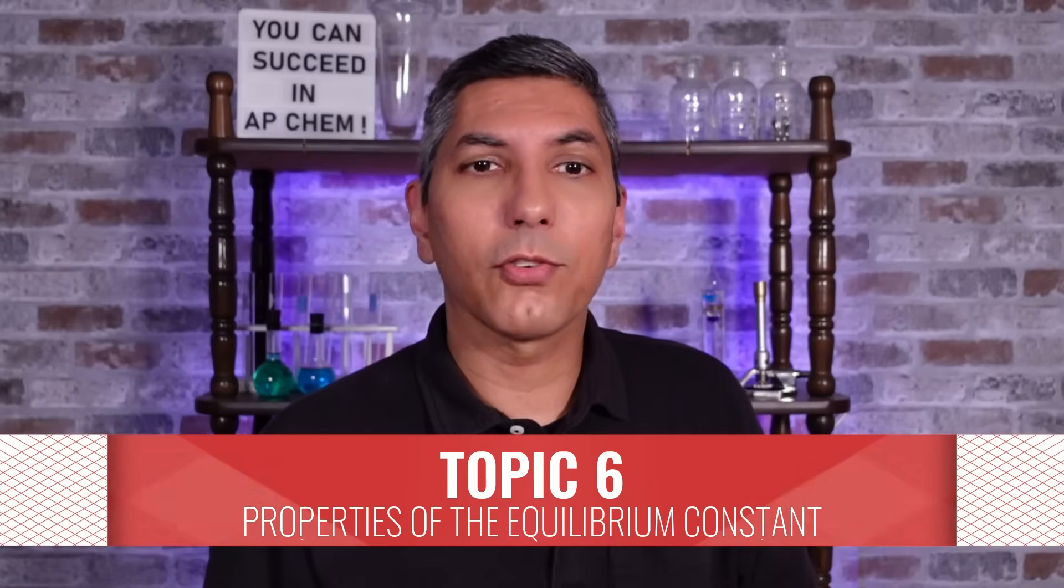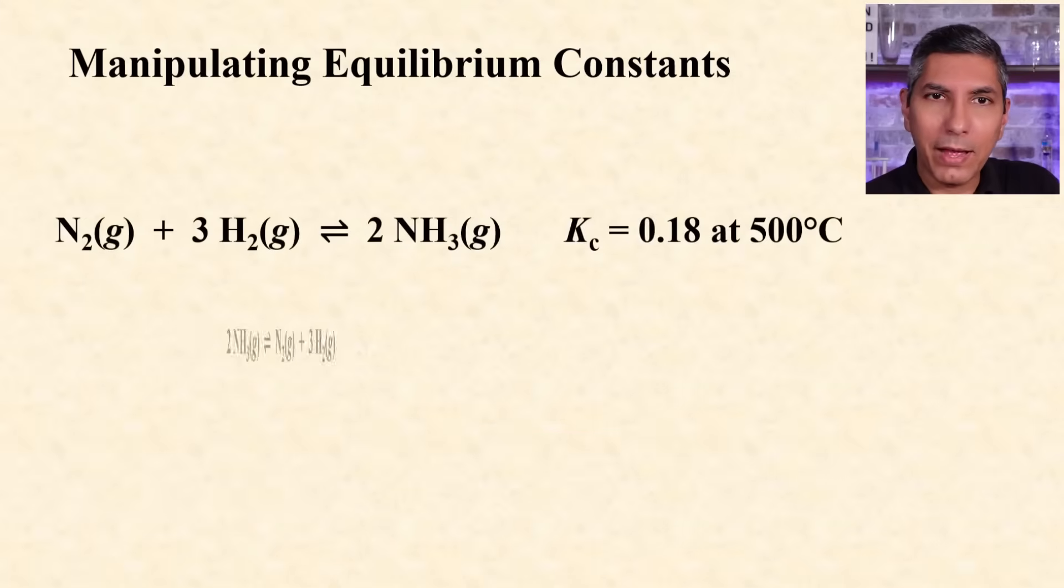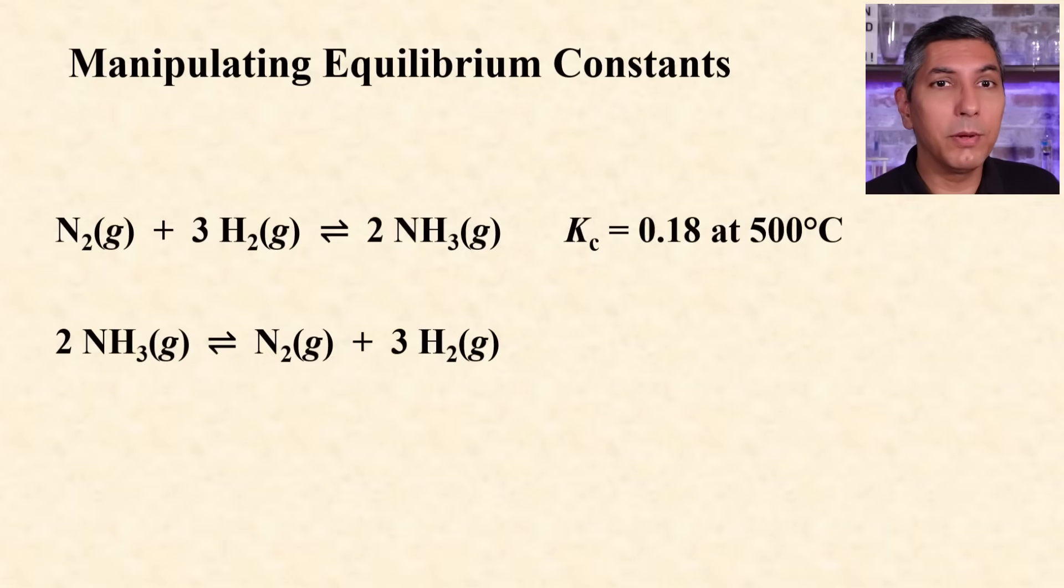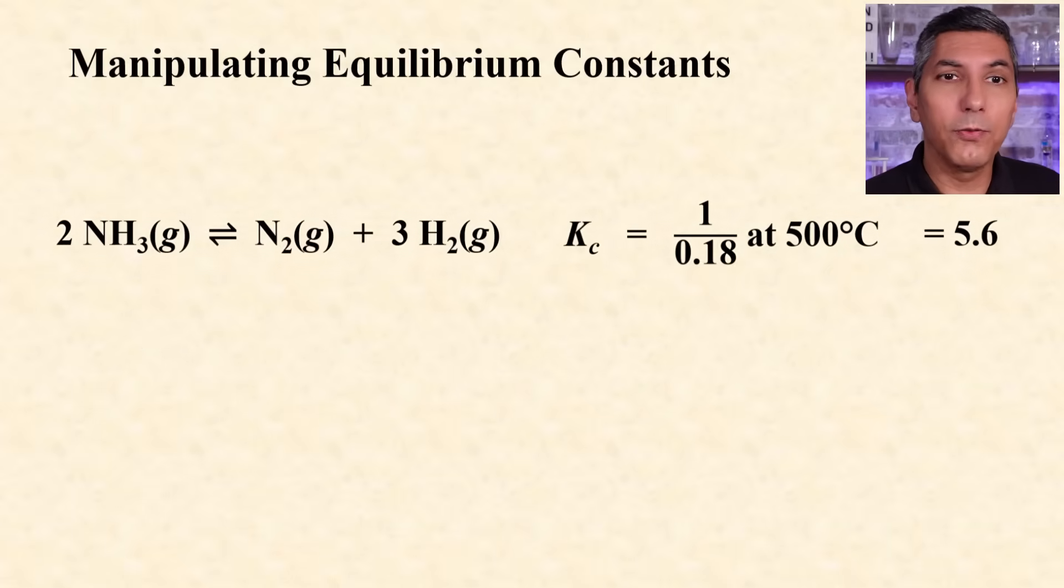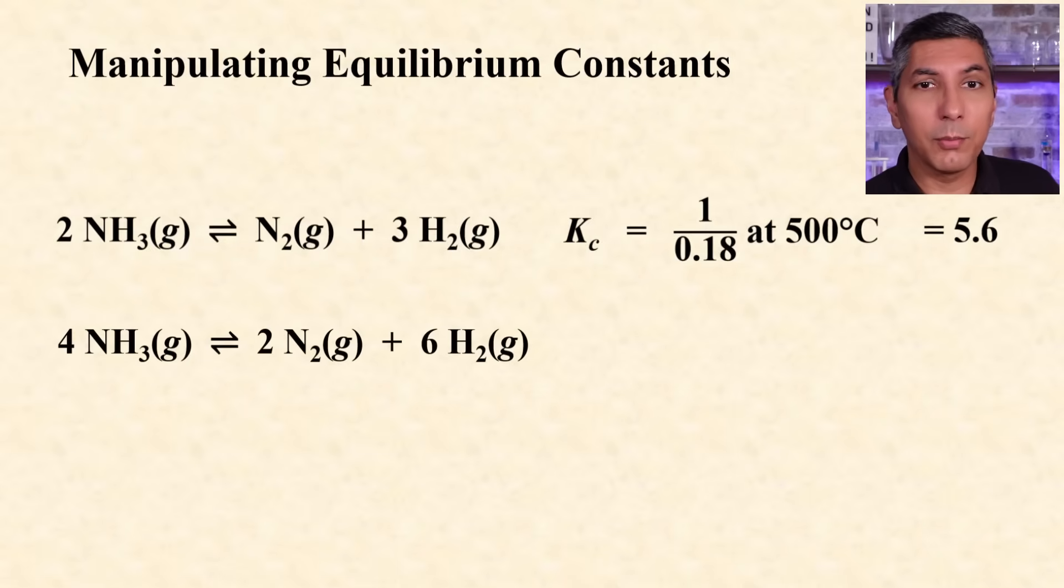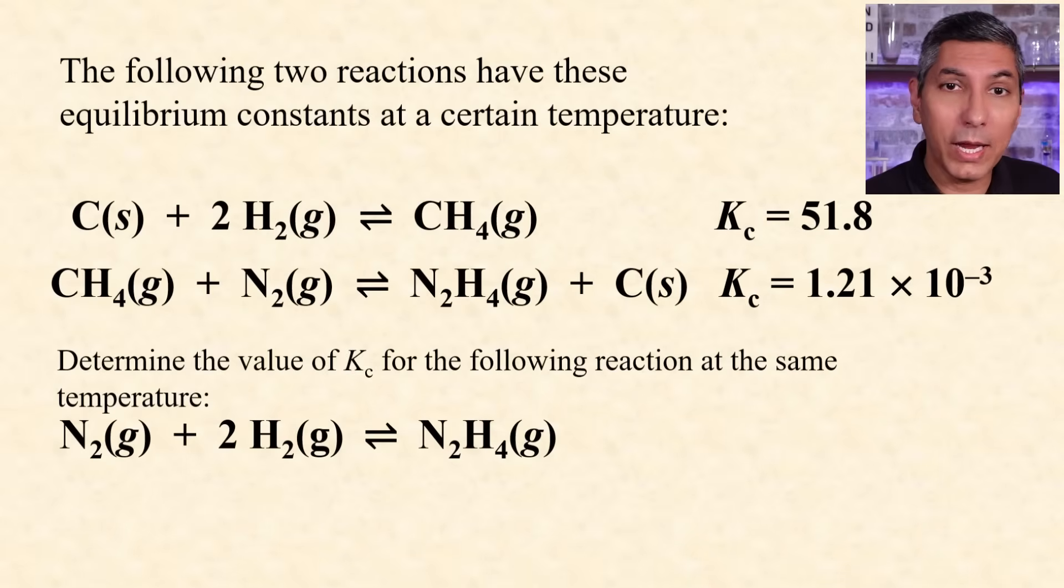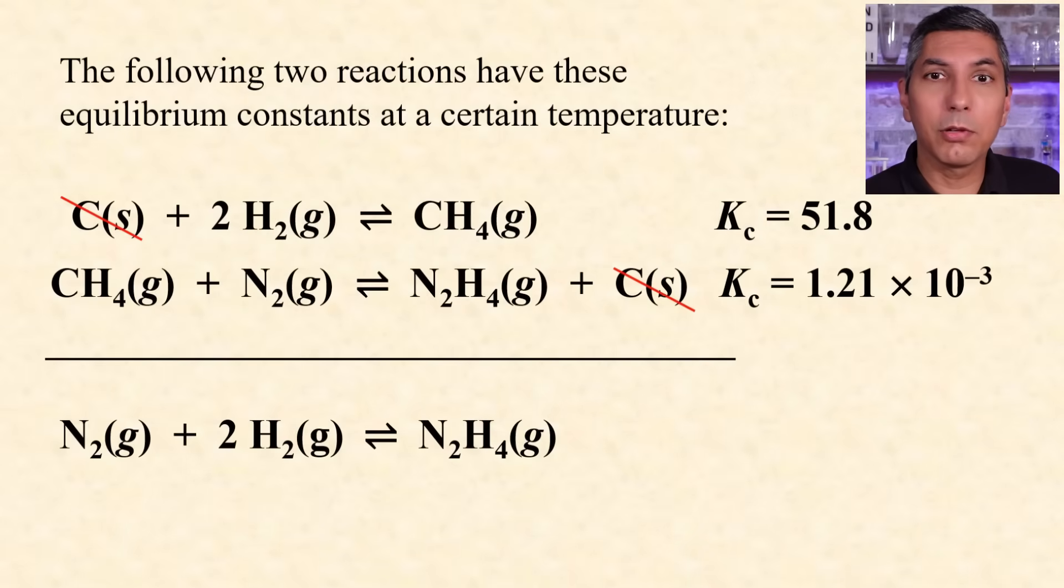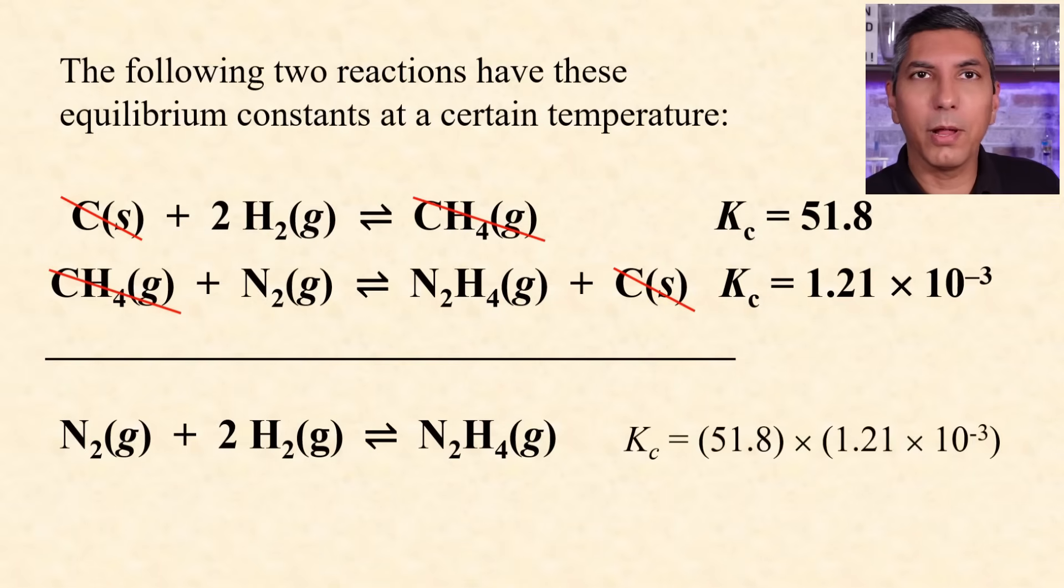The larger the equilibrium constant, the greater the ratio of products to reactants you generally have. When we manipulate a reaction, the equilibrium constant changes accordingly. When we flip a reaction around, the equilibrium constant becomes the reciprocal of what it was before. When we double all the coefficients in a reaction, the equilibrium constant becomes the square of what it was before. And if we add reactions together to create a new reaction, the two individual equilibrium constants are multiplied by each other to become the constant of the new reaction.